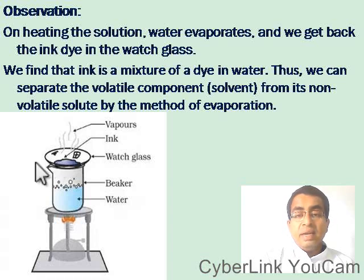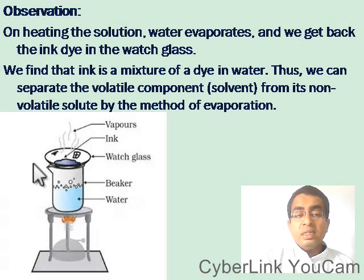On heating the solution, water evaporates and we get the ink dye in the watch glass. We find that ink is a mixture of a dye in water. Thus we can separate the volatile component — solvent — from its non-volatile solute by the method of evaporation.